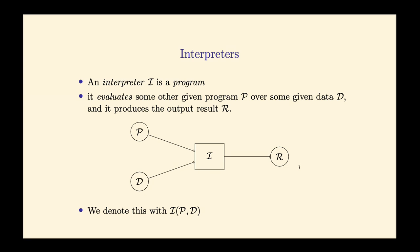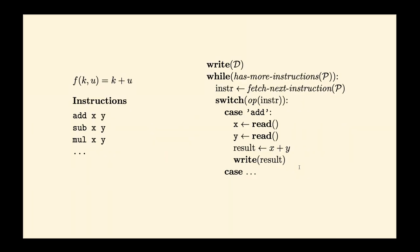What about interpreters? An interpreter is a program — that's important. It takes a program as its input and also takes the input to that program, then evaluates that program and gives you the result. If the program is P and the data is D, then the interpreter I evaluates P over D and gives you back R — we could denote this as I(P, D).